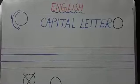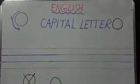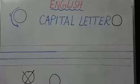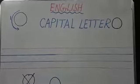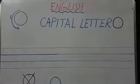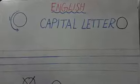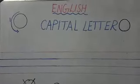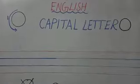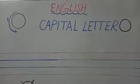Now let's see how to write in our four lines notebook. Again children, what do you have to say? Red line. Blue line. Blue line. Stop.